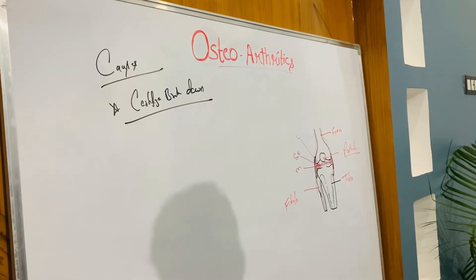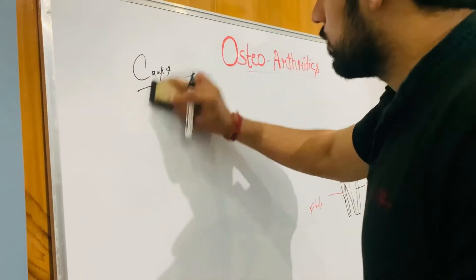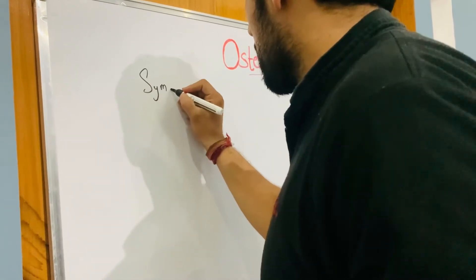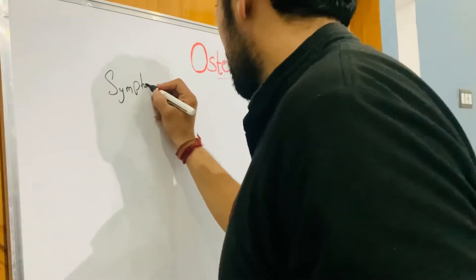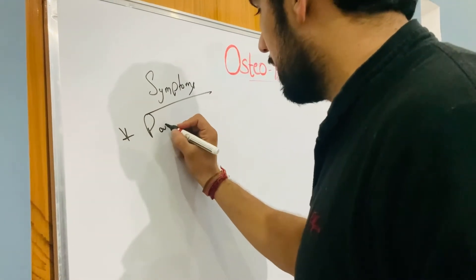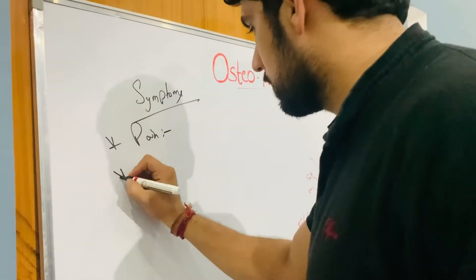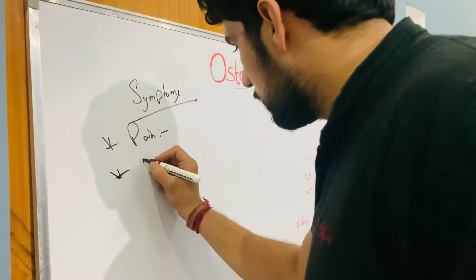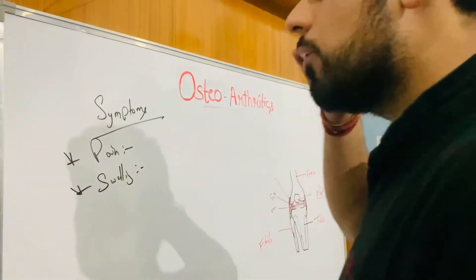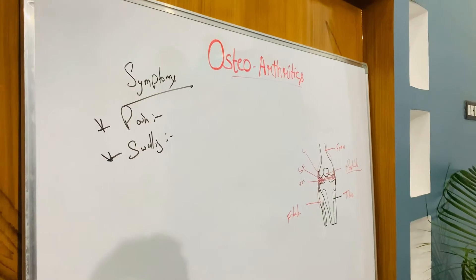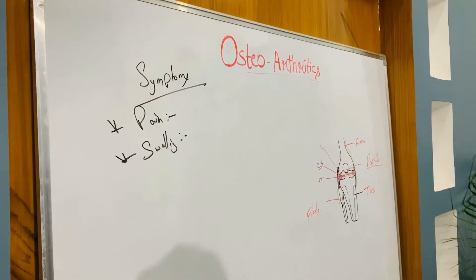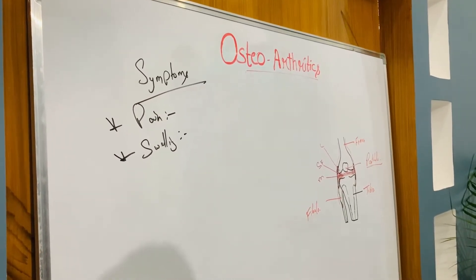Now let's study the symptoms the patient will feel. First of all, there is pain. Pain can also be felt on the medial side or from the inside and outside spaces of the joint. Swelling is also a common symptom.